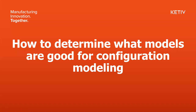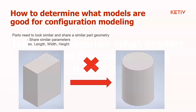How to determine what models are good for configuration modeling: you want things that are very similar in the way they look and move. For example, a box constrained to length, width, and height — you don't want to go from that to a cylinder, which only has height and radius. Even though they share the height parameter, you don't want to jump between fundamentally different shapes. In an assembly though, having both square and circular openings is perfectly fine.